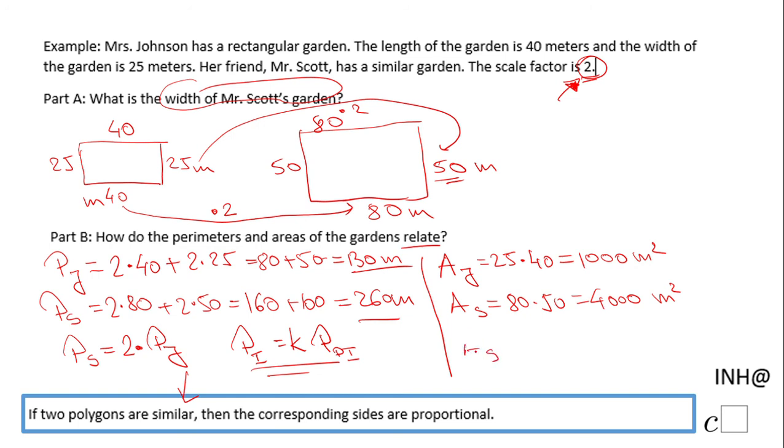Here we should notice that the area of Mr. Scott's garden is 4 times larger than the area of Miss Johnson's garden, right? 1000 to 4000, four times larger. And that four is nothing else than the scale factor, in this case, which is 2, raised to the second power.